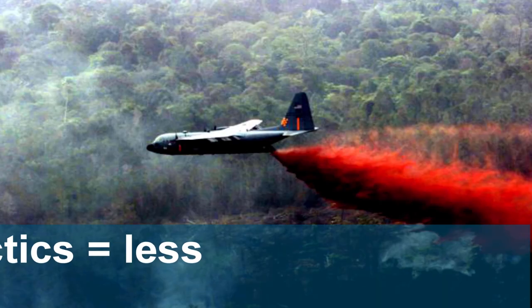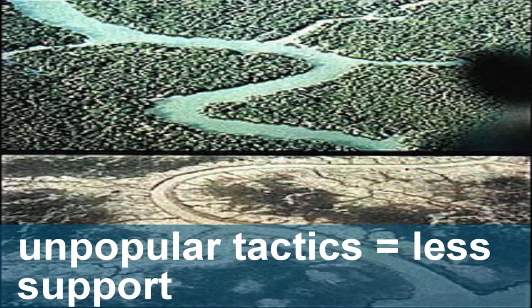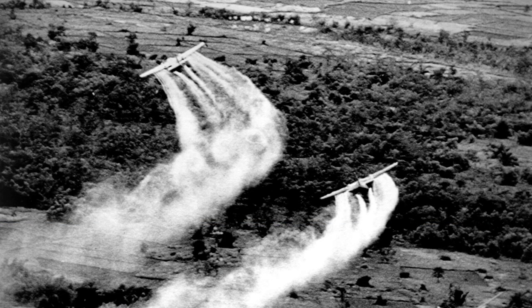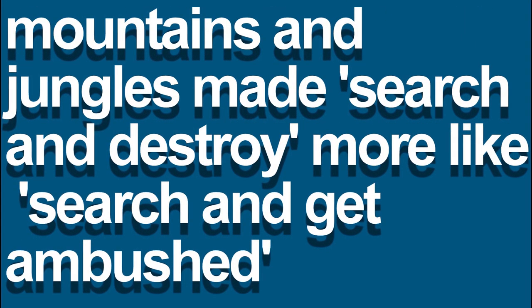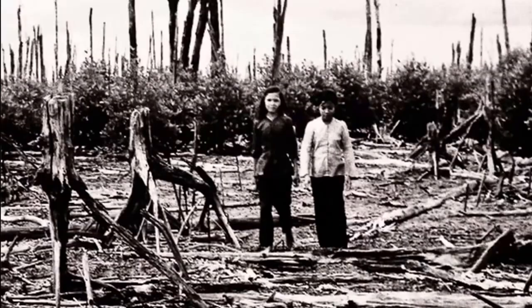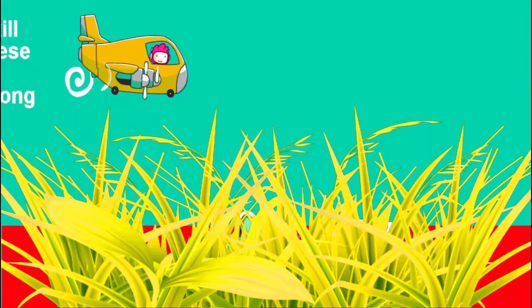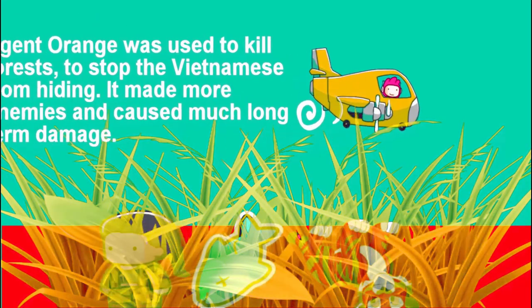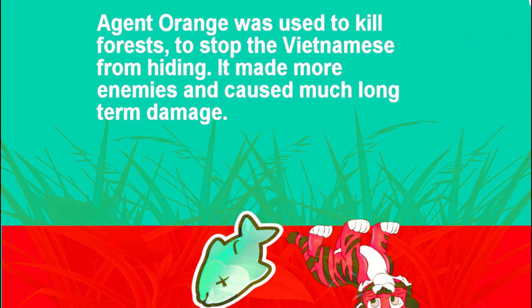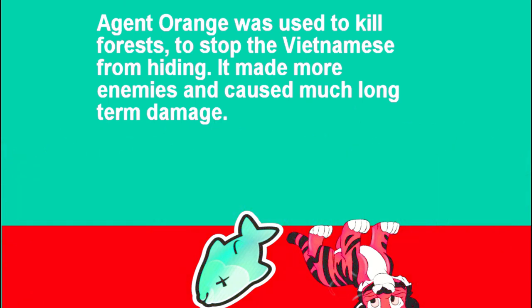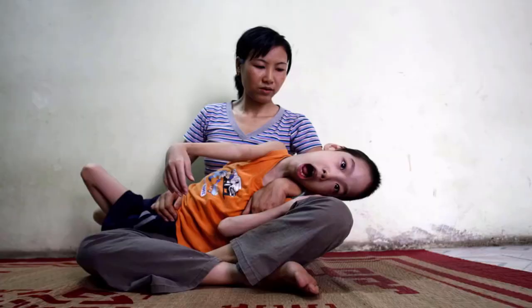The US used defoliants such as Agent Orange to kill the jungle canopy, because the terrain was so difficult — the hills and the jungles and the swamps made it very difficult to actually find, pin down, and destroy the enemy. So using defoliants, chemical warfare against the trees, was one of the tactics. But while it may have had some success, it came at the cost of America's international reputation and its ethics. Agent Orange still causes untold damage and misery today.